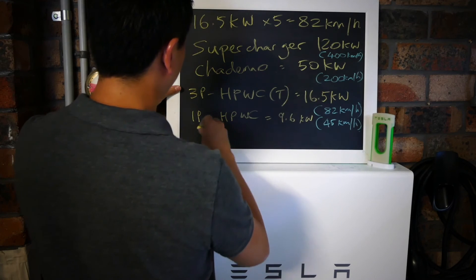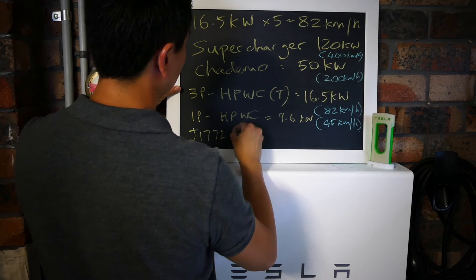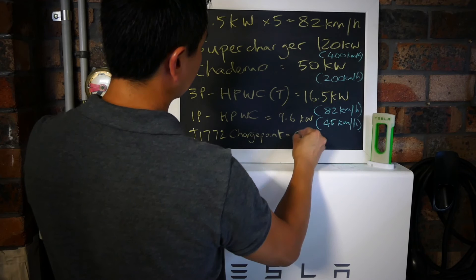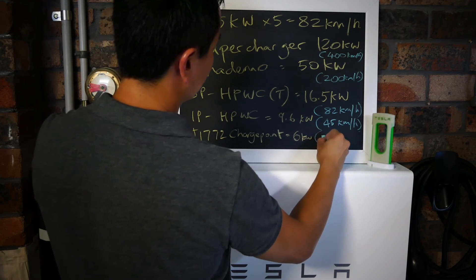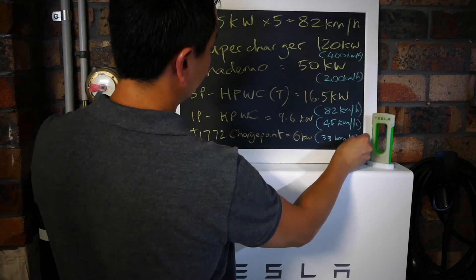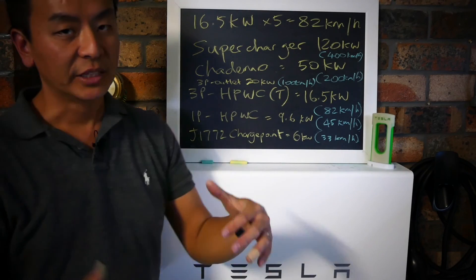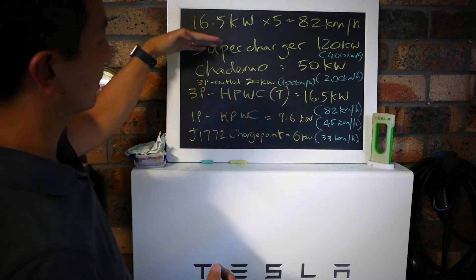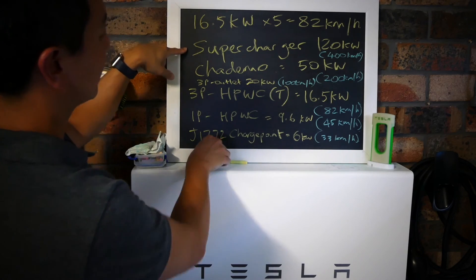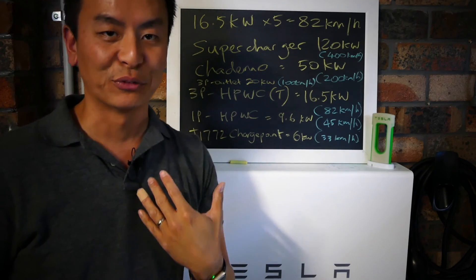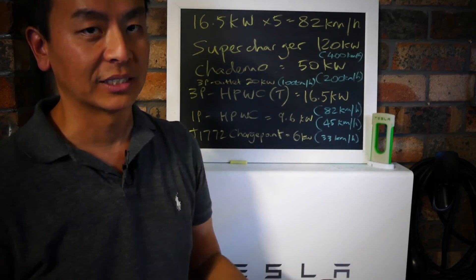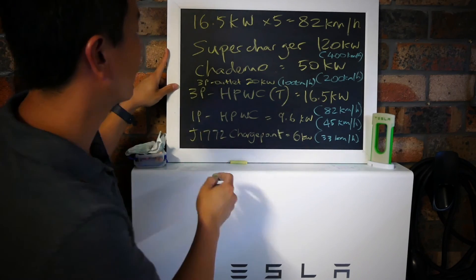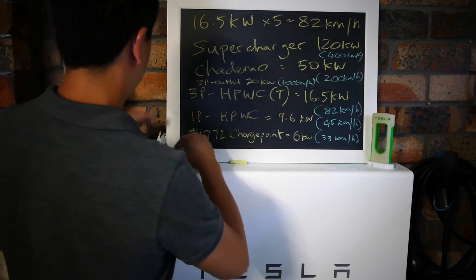Then the J1772 ChargePoint, the ones found in shopping centers, are only at 6 kilowatts, and that's 33 kilometers per hour. So a myriad of options, a little bit complicated, but if you understand the terminology, you've got a few options here. Supercharger is free if you get a referral like my referral, free for Tesla owners with a referral. CHAdeMO requires an adapter for the Tesla, which is about $700.